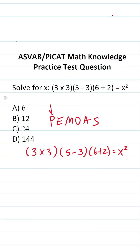This says you work out what's in parentheses first, exponents next, multiplication and division as they appear in the expression from left to right, and then addition and subtraction as they appear in the expression from left to right.